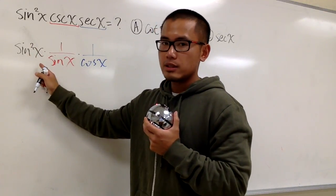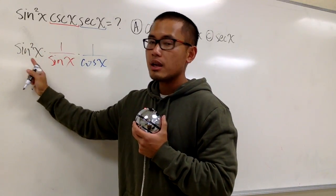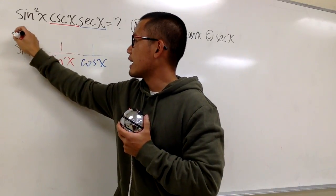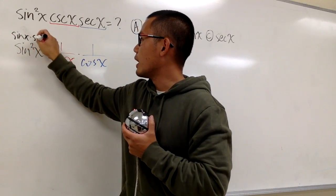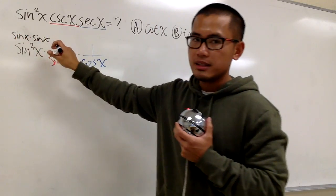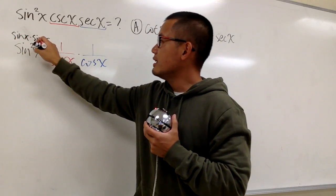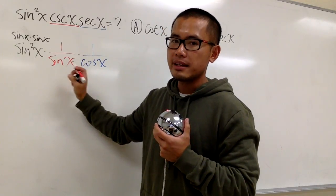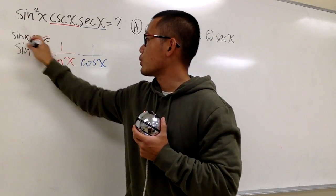For sine squared x, when the notation is written this way, this means we have sine x times another sine x. I purposely wrote this down like this so I can show you this sine x can be cancelled with this sine x in the denominator, so we can just cross them out.